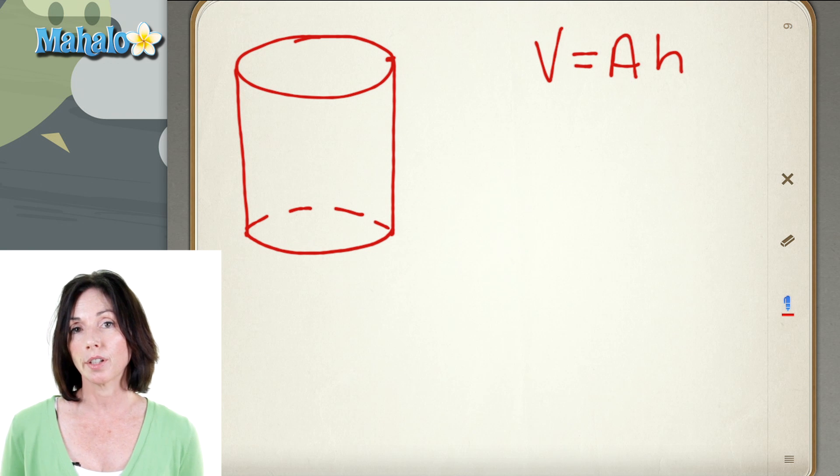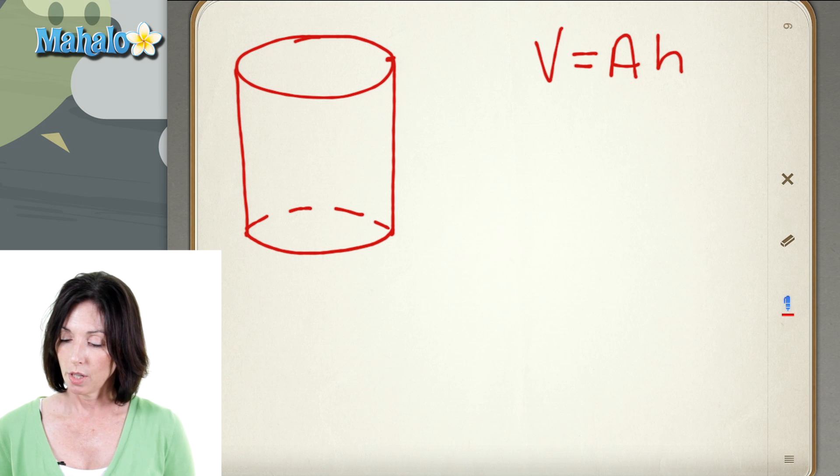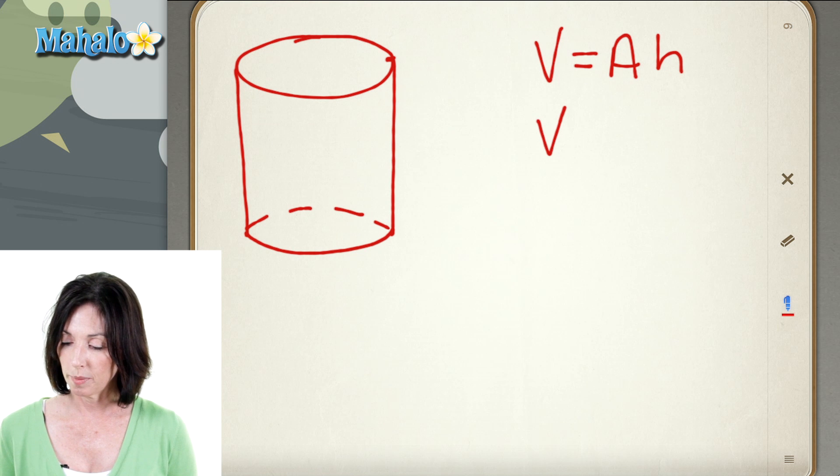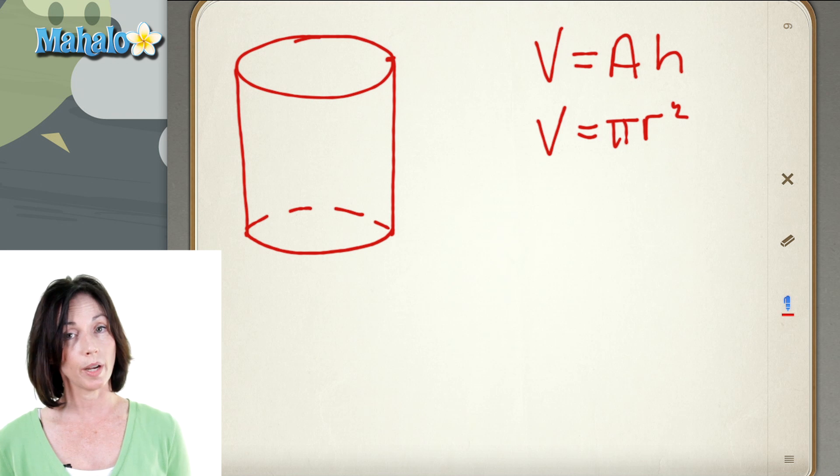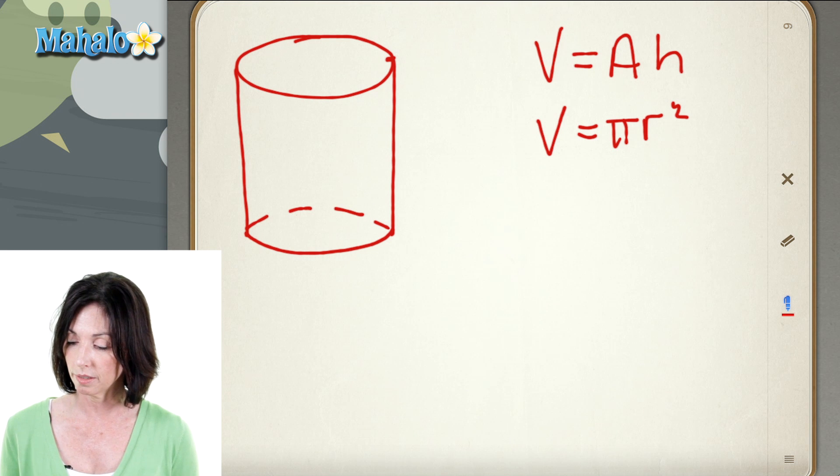Now, for a cylinder, the base is circular. So we could rewrite the volume formula as pi r squared, because pi r squared is the area of a circle, which is the base on the cylinder, multiplied by the height.